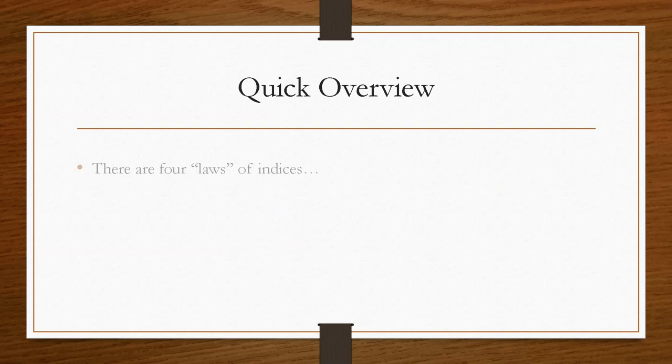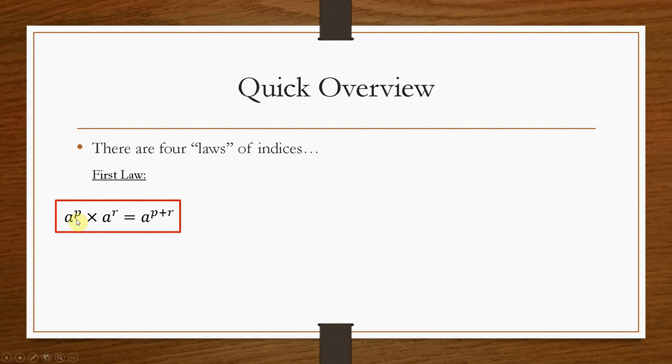So there are four laws of indices. Law number one is when you times indices, you add the powers. So if you have a² times a⁵, then it would be a⁷, because you add the powers, 2 plus 5 equals 7.